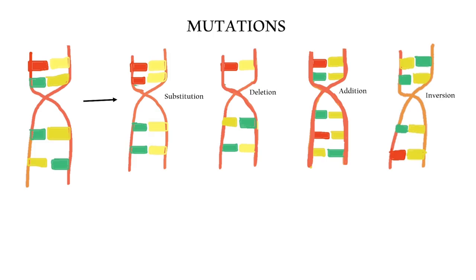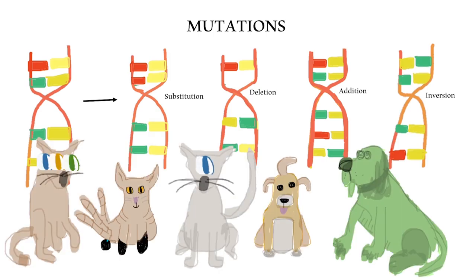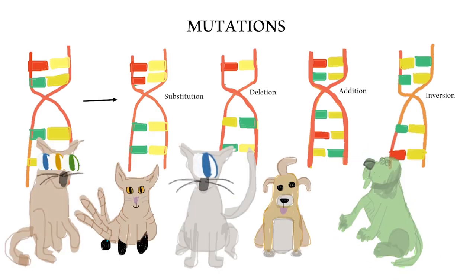Mutations change DNA in various ways, having neutral, beneficial or negative effects. Good mutations increase an individual's chance of survival, so they're more likely to pass on these traits to future generations.